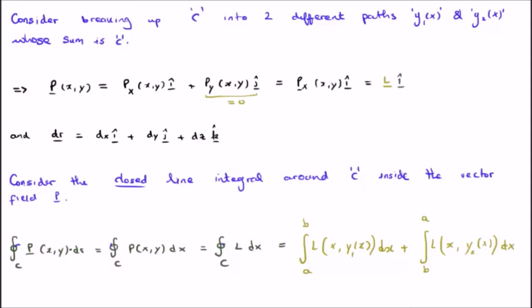Now we're going to consider the closed line integral around the curve C but inside the vector field P which only has an I hat direction. Now of course the line is going to be dr. The infinitesimal line element is dr, dx i hat plus dy j hat plus dz k hat.